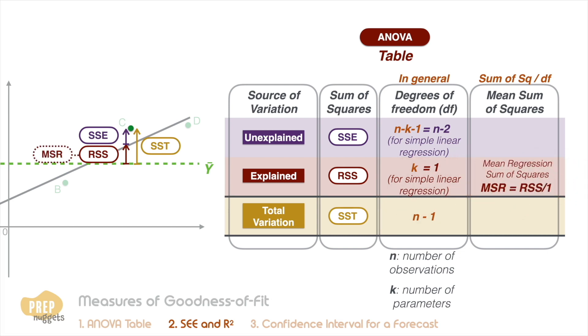For a simple linear regression, the MSR is simply equal to the RSS. And to calculate the mean of the sum of squared errors, we divide the SSE by n minus 2.